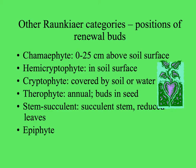Other categories based on the position of renewal buds include chamaephytes, with renewal buds at or very near the soil surface above the ground; hemicryptophytes, with buds right at the surface of the soil; cryptophytes, with those renewal buds buried; and therophytes — ephemeral plants that die and are gone, with their renewal buds in their seeds, like desert annuals. Raunkiaer also recognized succulents, stem succulents, and epiphytes in his classifications.